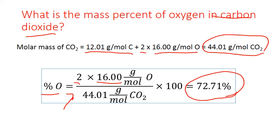Now I'm not asked for the percent of carbon in this particular problem, but you can figure it out because you know the total mass has to equal 100. There are only two elements, so if oxygen is 72.71 percent, then carbon has to be 100 minus 72.71 percent, or 27.29 percent.